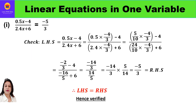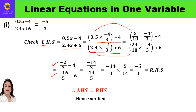For verification, start with the left hand side: (0.5x minus 4) upon (2.4x plus 6). Substituting x equals minus 4/3: numerator becomes (5/10)(minus 4/3) minus 4, denominator becomes (24/10)(minus 4/3) plus 6. Simplifying gives minus 2/3 minus 4 in the numerator and minus 16/5 plus 6 in the denominator. Taking LCM of 3 in the numerator gives (minus 2 minus 12)/3 = minus 14/3. Taking LCM of 5 in the denominator gives (minus 16 plus 30)/5 = 14/5.